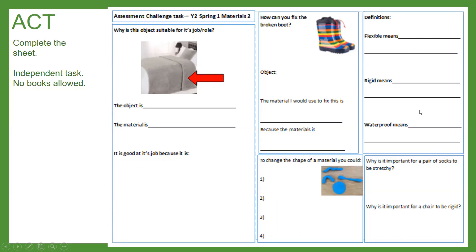The fourth box tests whether you know what certain words mean. We'd like you to write your own definition for the word 'flexible', then the word 'rigid', and then the word 'waterproof'. Tell us what those three words mean in your own words — you can write your own example there.